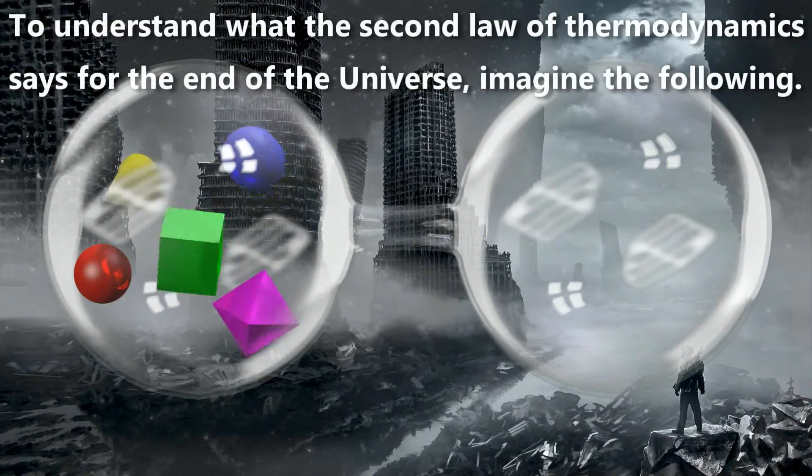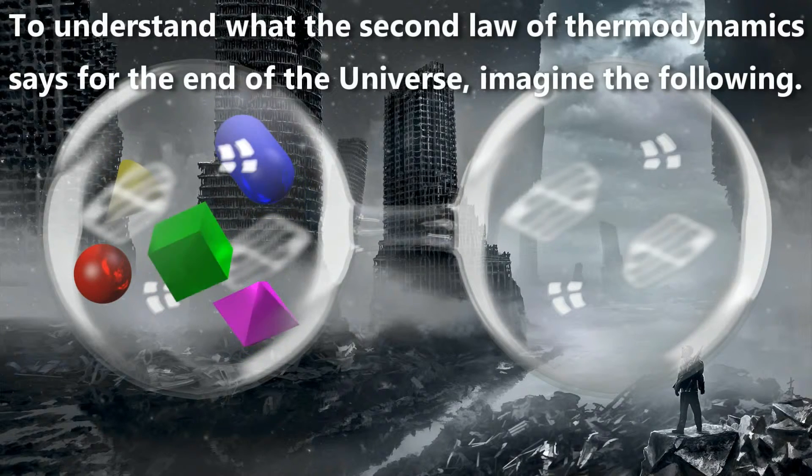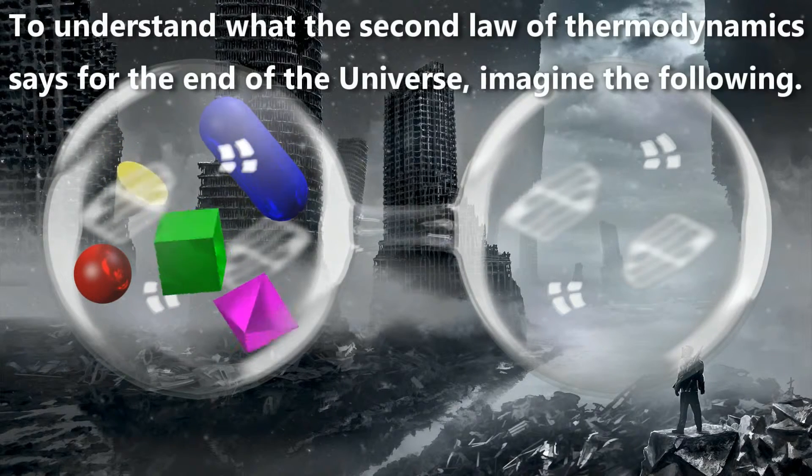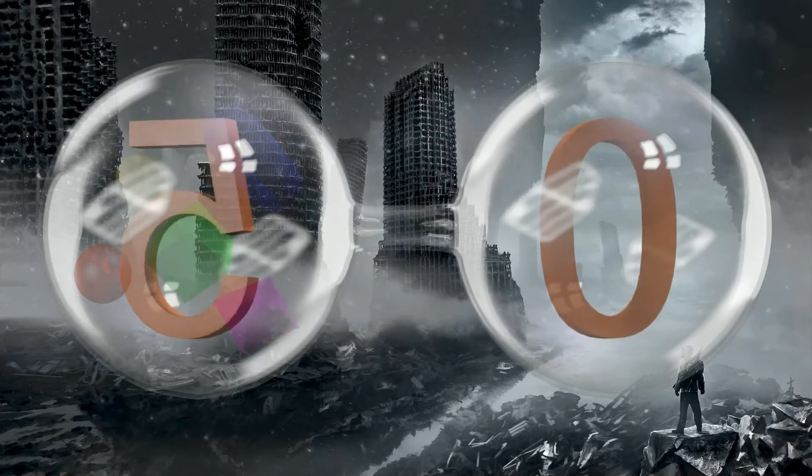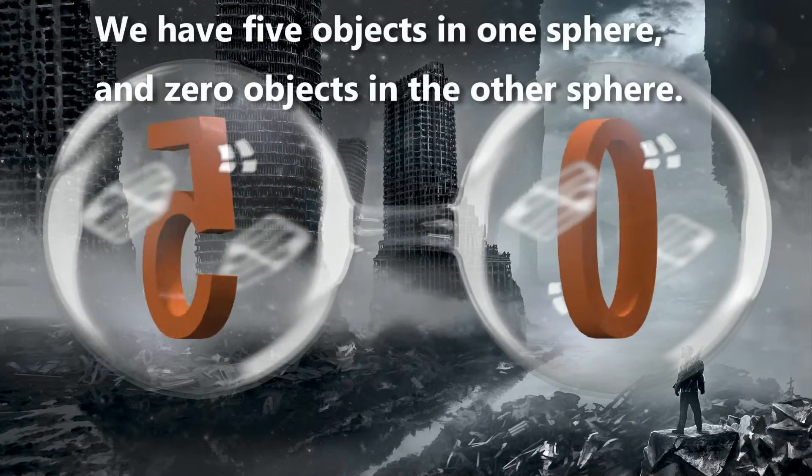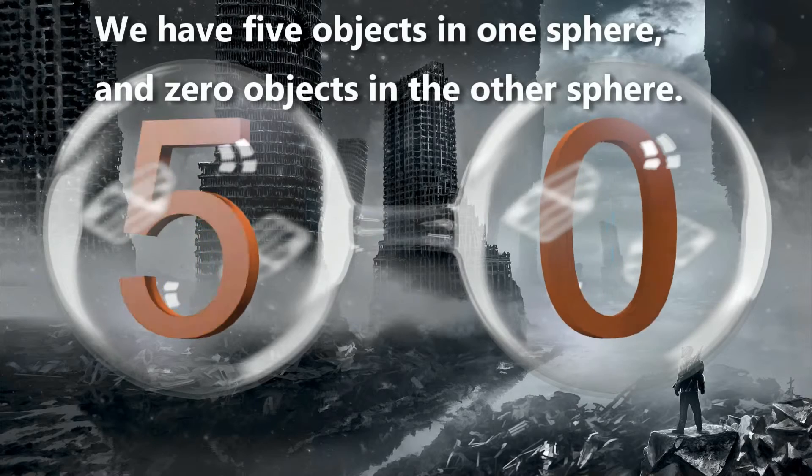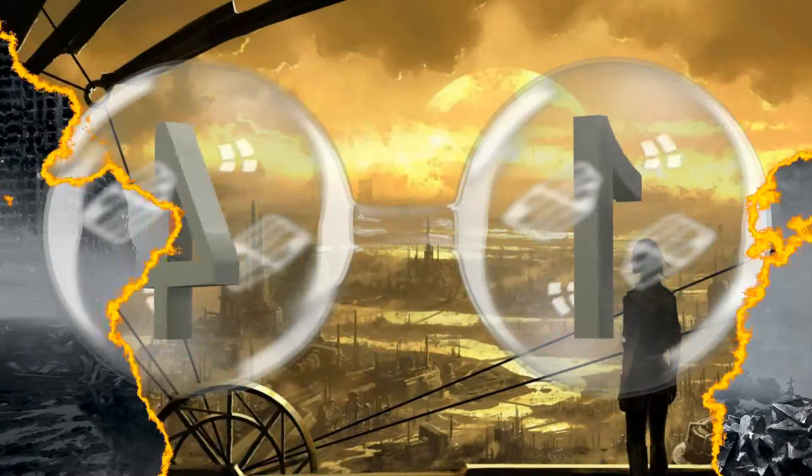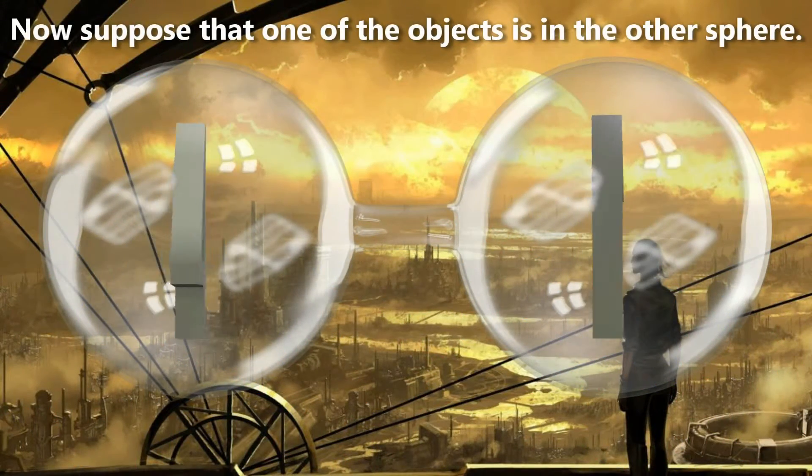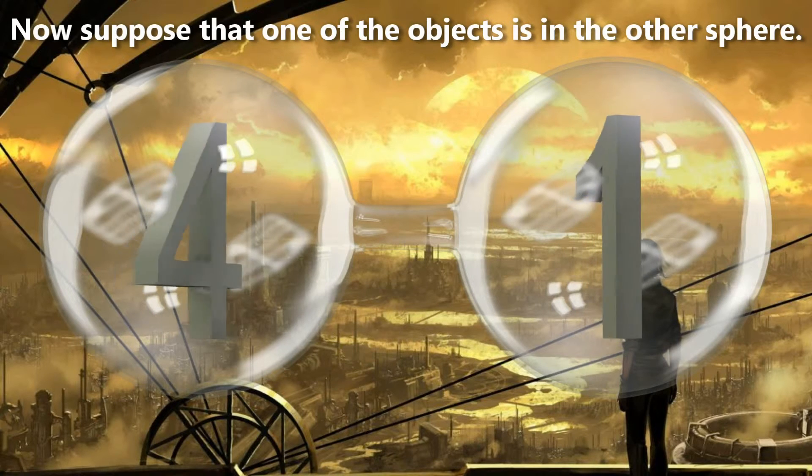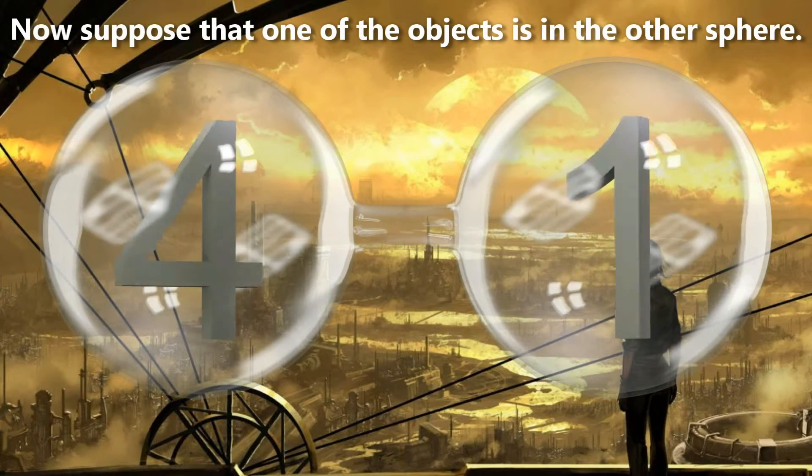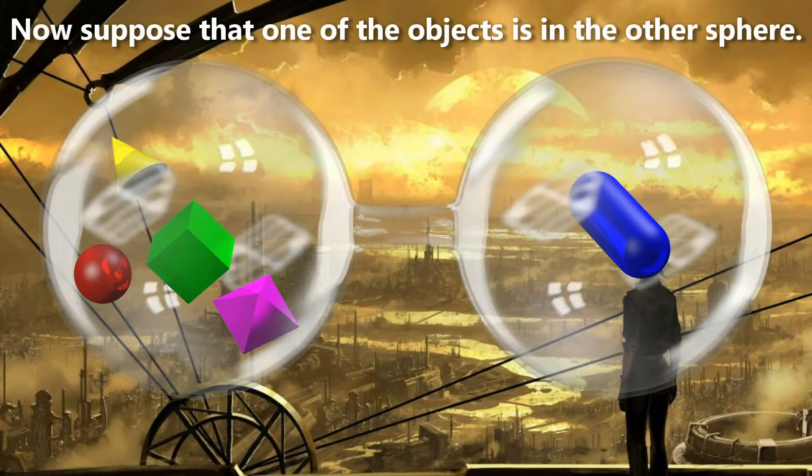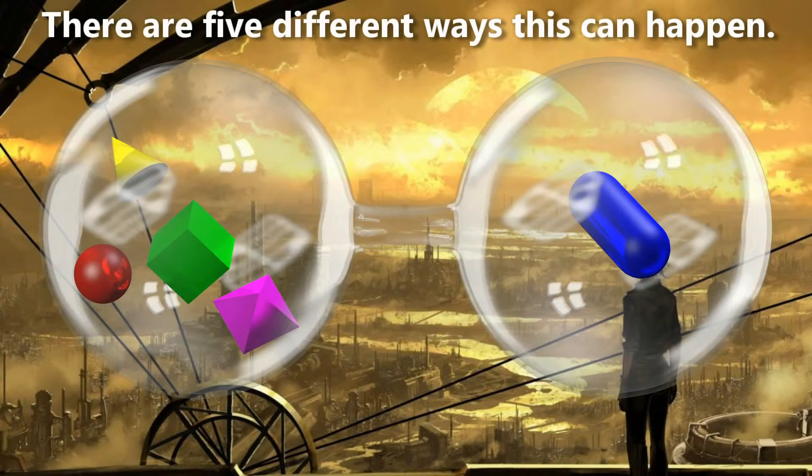To understand what the second law of thermodynamics says for the end of the universe, imagine the following. We have five objects in one sphere, and zero objects in the other sphere. Now suppose that one of the objects is in the other sphere. There are five different ways this can happen.